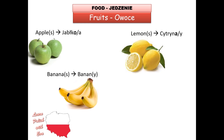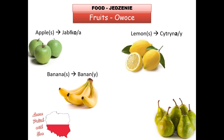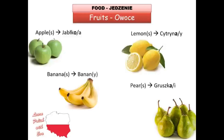'Cytryna' is our next fruit — lemon — 'cytryna' or 'cytryny' in the plural. As you can see, there are a lot of fruits and vegetables that are simple in how we form the plural, but some are a little bit trickier. Here we have 'gruszka', which is a pear. In the plural version it's not 'gruszki' — that sound isn't really Polish — but 'gruszki' already is, because we like to make the sounds softer. 'Gruszka', 'gruszki'.